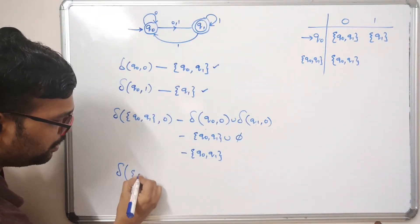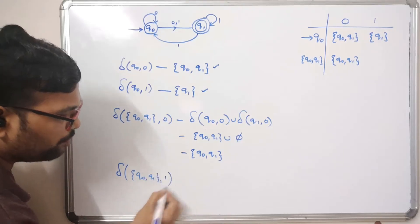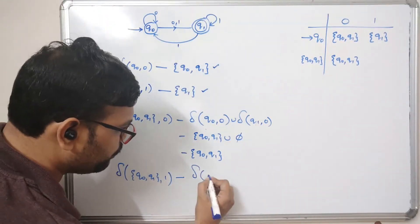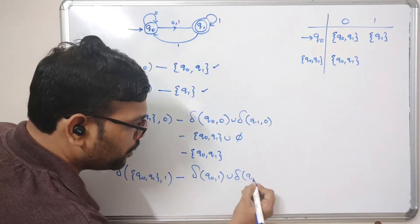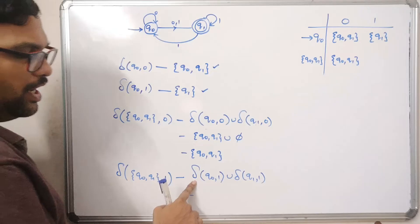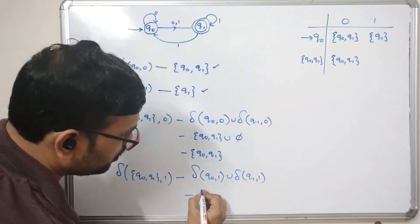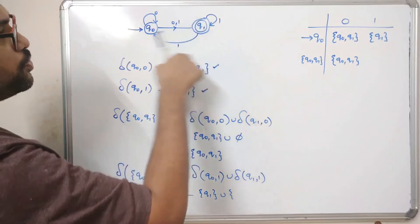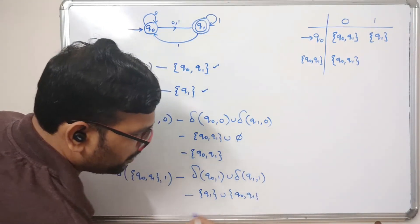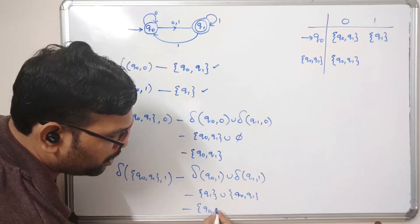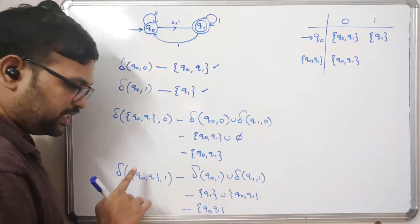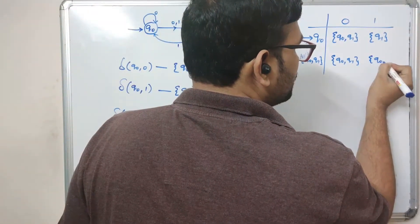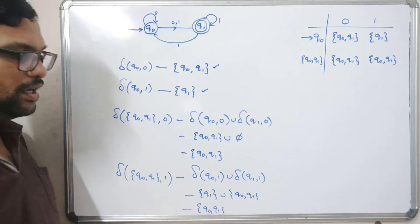We also have to find the transition for {q0, q1} with input symbol one. Expanding: delta(q0, 1) union delta(q1, 1). q0 on one moves to q1, and q1 on one moves to q0 and q1. Applying the union gives {q0, q1}. So {q0, q1} on one also has a self-transition — the resultant is again {q0, q1}.